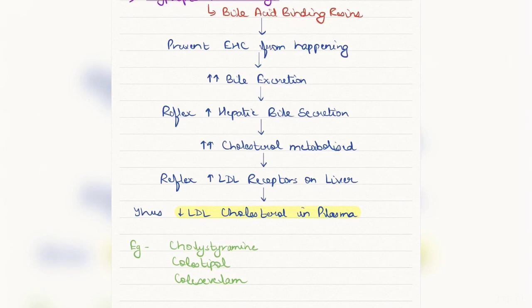These bile acid binding resins prevent enterohepatic circulation from happening by binding to the bile acids in the intestine. This increases the bile excretion, which ultimately reflexively increases the hepatic bile secretion or production.